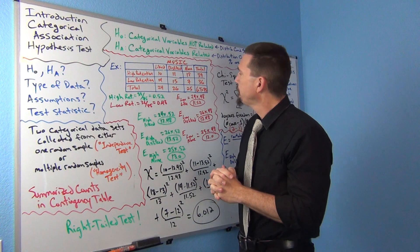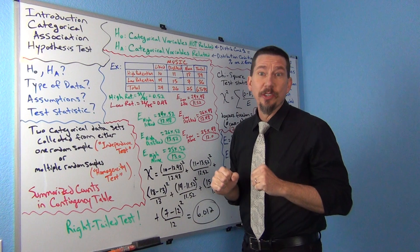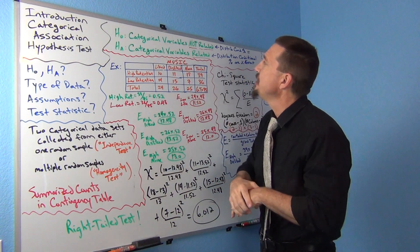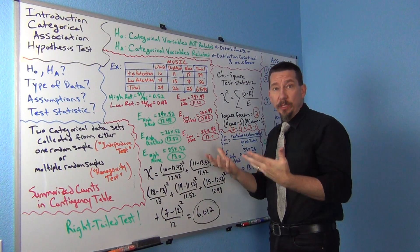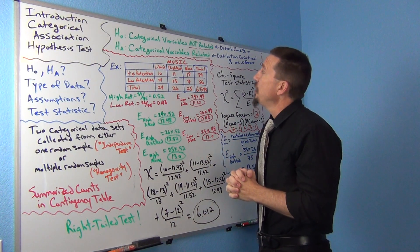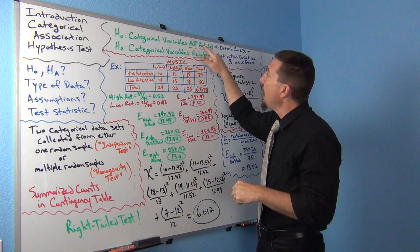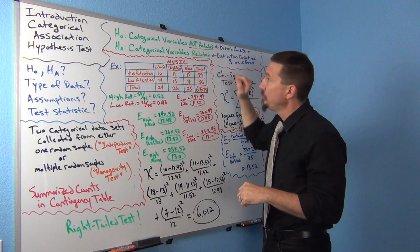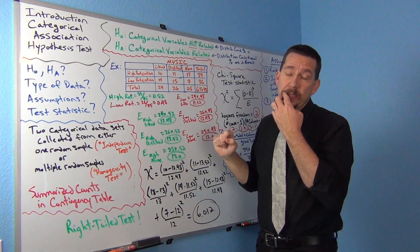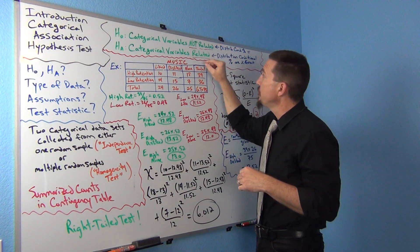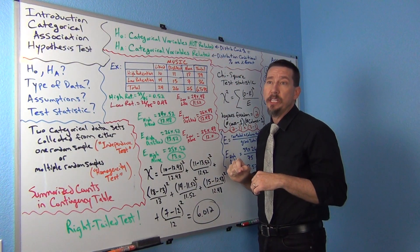The null hypothesis for the Categorical Association Test is that the categorical variables are not related, and the alternative is that the categorical variables are related. Sometimes you'll see this as 'not associated' versus 'associated,' or 'independent' for the null versus 'dependent' for the alternative. There are different ways you'll see this written in different stat books.